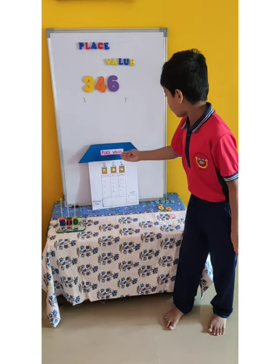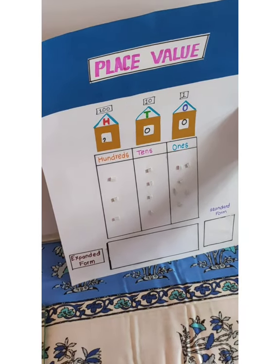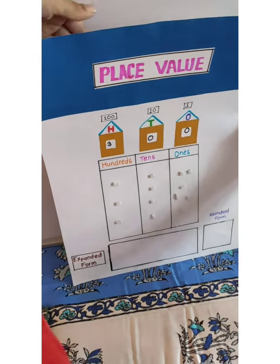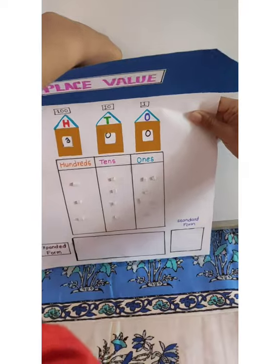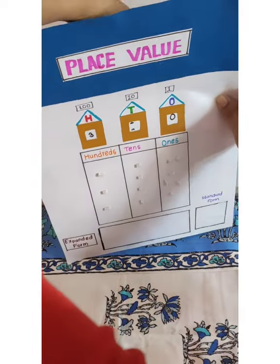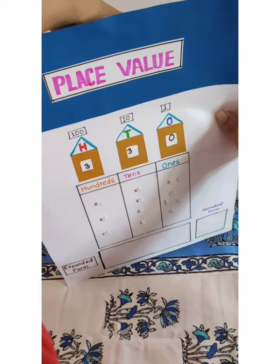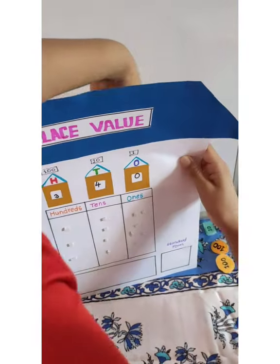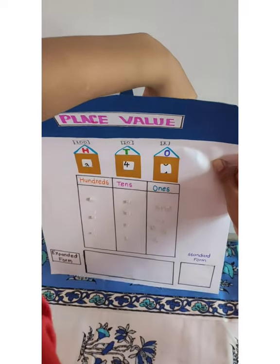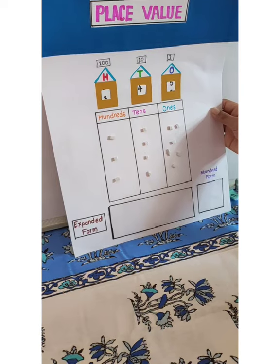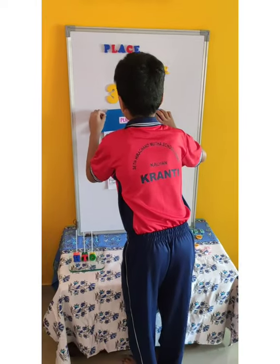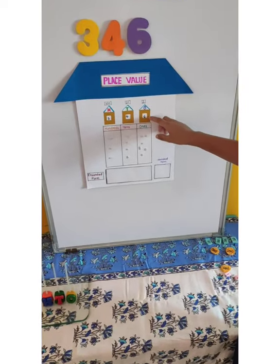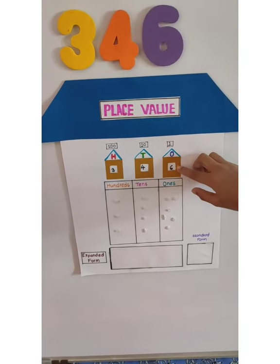Now I am placing this number in the place value slider. I am placing this number from right to left. You have to take 1 for 6 times.